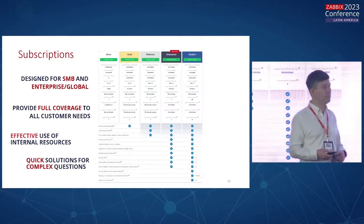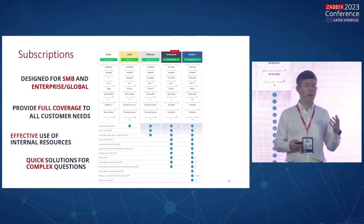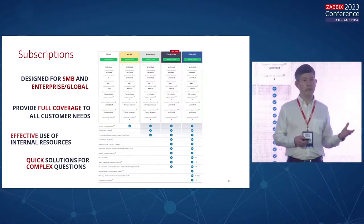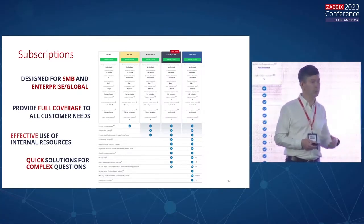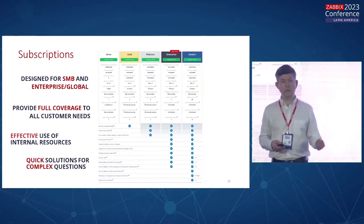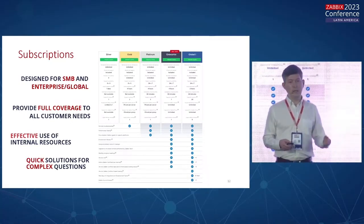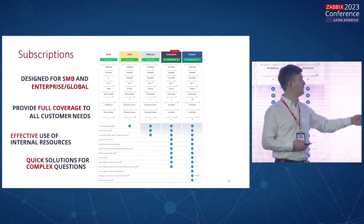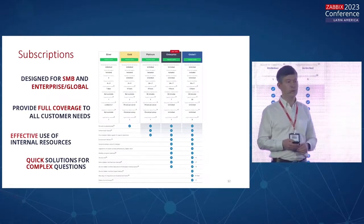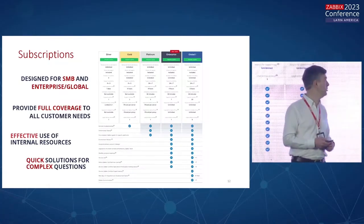In Latvia, at our headquarters, the primary service purchased by customers is enterprise. It comes with a limited number of Zabbix proxies, Zabbix servers, a very good SLA in regards of response time. Enterprise is our leading product, at least for Zabbix SIA in Europe.